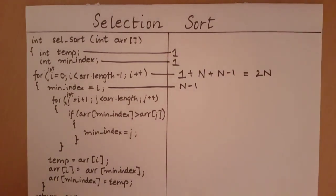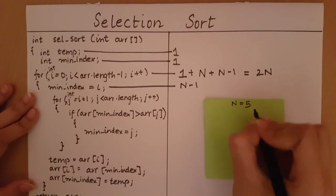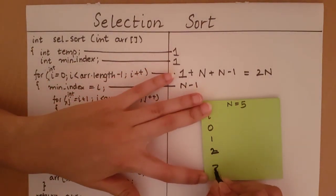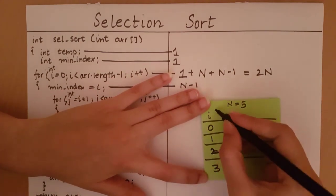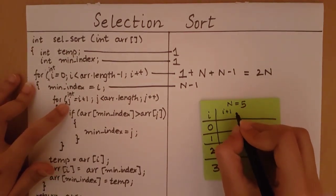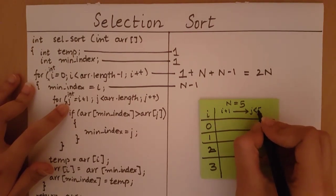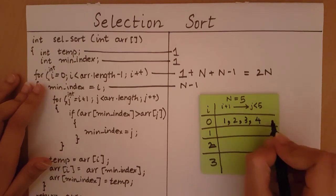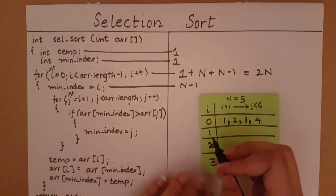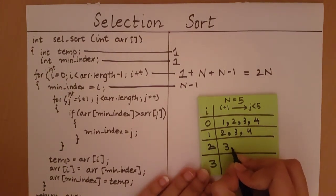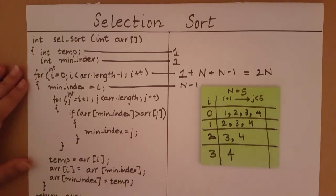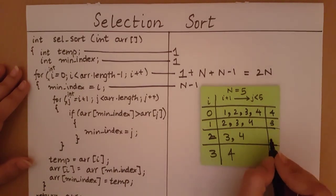Now let's come to the j loop and find out how many times it executes. For a problem size of 5, the values of i are 0, 1, 2, and 3. j goes from i plus 1 all the way till j is less than array.length, i.e., less than 5. When i is 0, j takes values 1, 2, 3, 4 — 4 times. When i is 1, j is 2, 3, 4 — 3 times. When i is 2, j is 3 and 4 — 2 times. When i is 3, j is just 4 — 1 time.